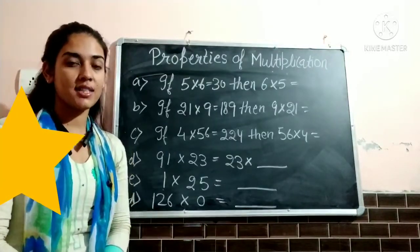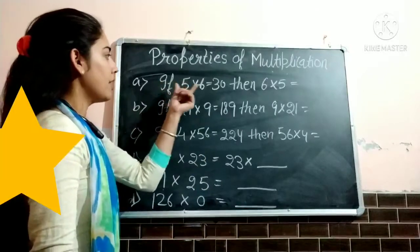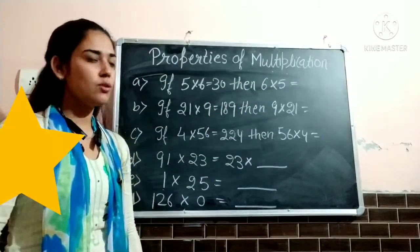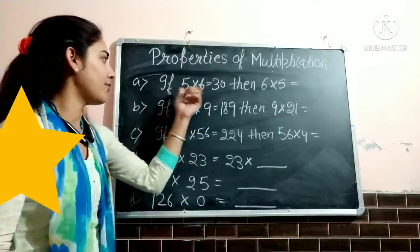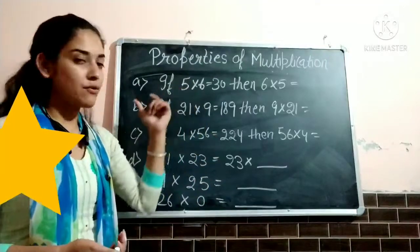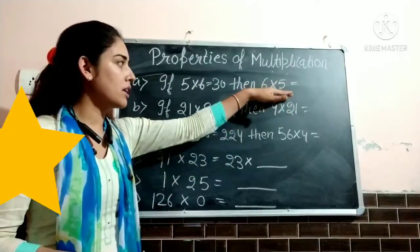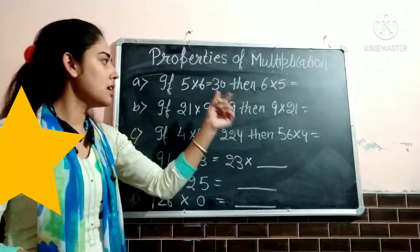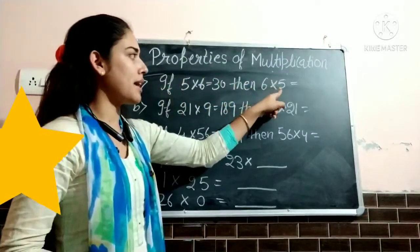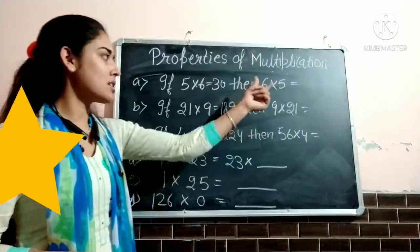Now let us discuss these questions — we will apply the properties we have already discussed. If 5 multiply 6 is equal to 30, then 6 multiply 5 is equal to — look here, only the order changed here, then the product will be same. 5 multiply 6 is equal to 30, it means 6 multiply 5 is also equal to 30. So 6 fives are 30.